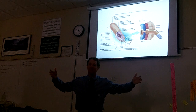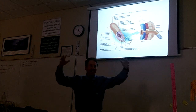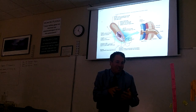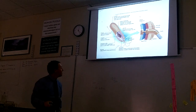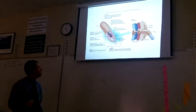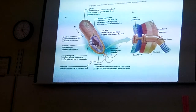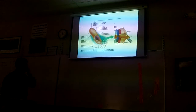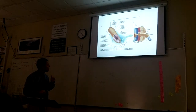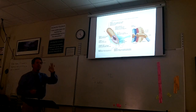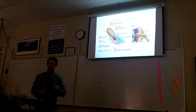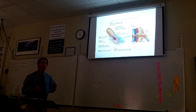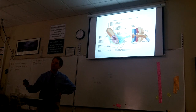Imagine a real, real long jump rope — like a mile long jump rope. Tie the ends of that together and then pack it all in a little space. That's a single looped chromosome. It has ribosomes, and the ribosomes are different than eukaryotic ribosomes — they're smaller. Ribosomes are also different between bacteria and archaea; bacteria have different ribosomes than archaea do.